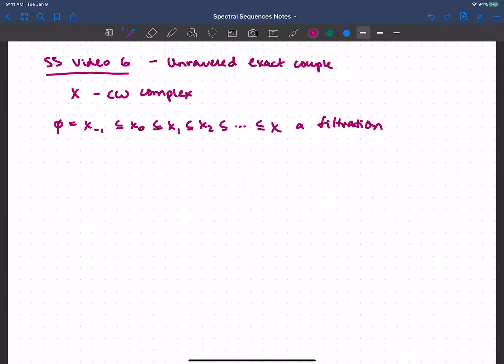So what could this filtration look like? Well in spaces we have sort of an obvious candidate, it could be the cellular filtration, making it a CW complex, and then our XN would just be the N skeleton, where we attach the N cells inductively to lower dimensional cell complexes.